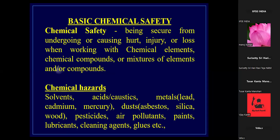Basic chemical safety is defined as being secure from undergoing or causing hurt, injury, or loss when working with chemical elements, chemicals, compounds, or mixtures of chemical elements or their compounds. This is the definition of chemical safety — prevention from any type of injury, hurt, or loss while handling or working with chemical elements or their derivatives.